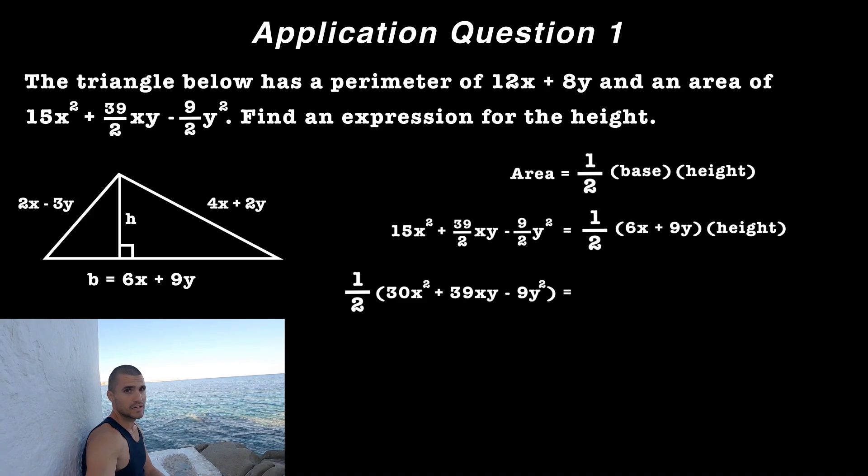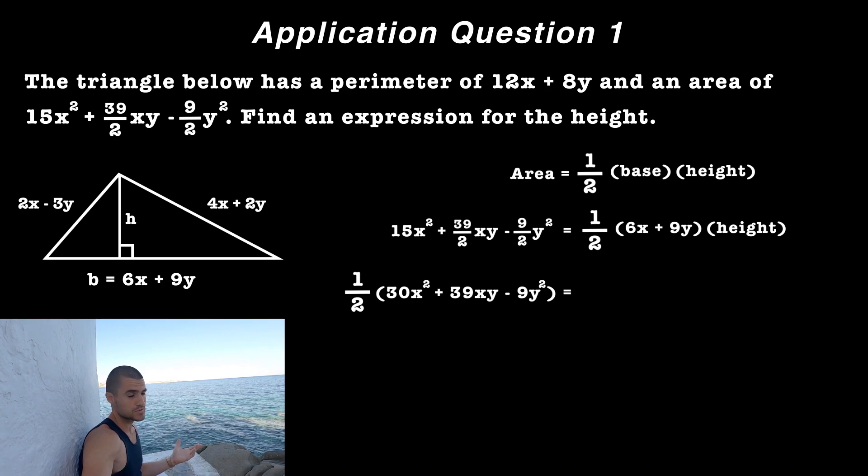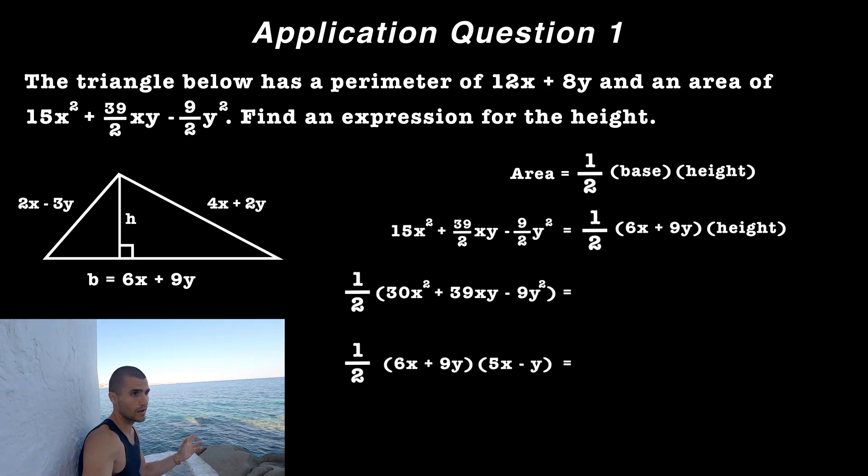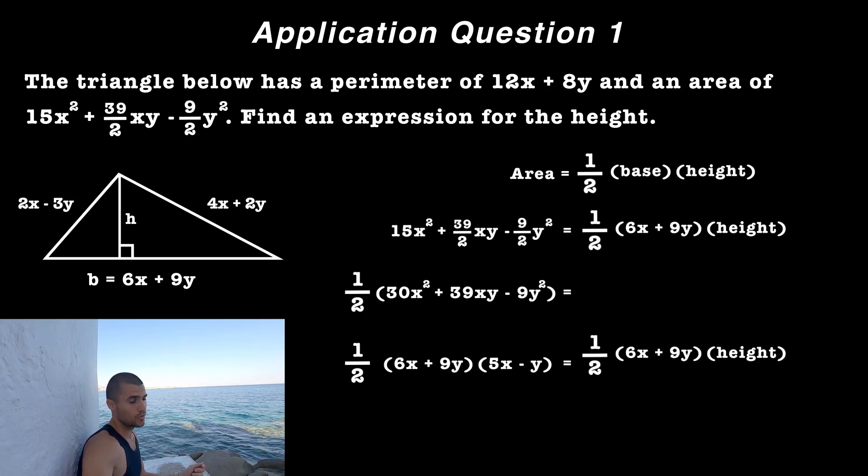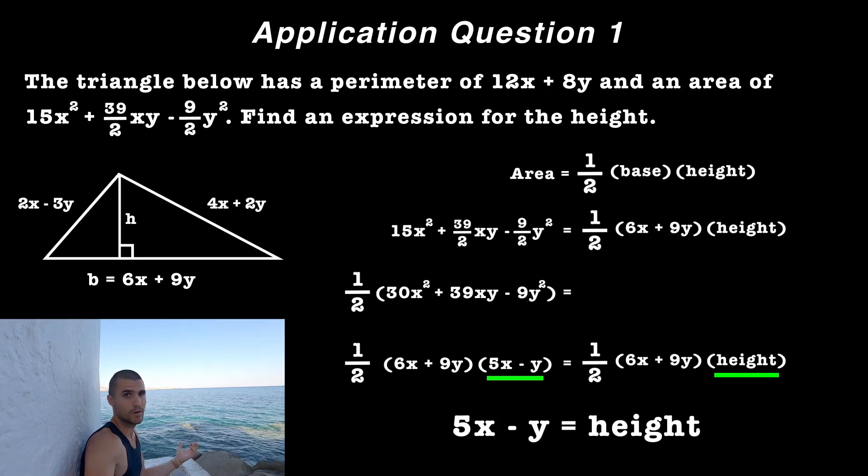So from here, that remaining expression, if you go into factoring that by decomposition, it's a multivariable expression, you'd end up with two factors, 6X plus 9Y, and then 5X minus Y. And so notice that at this point, it's obvious to see that the height is going to be 5X minus Y.